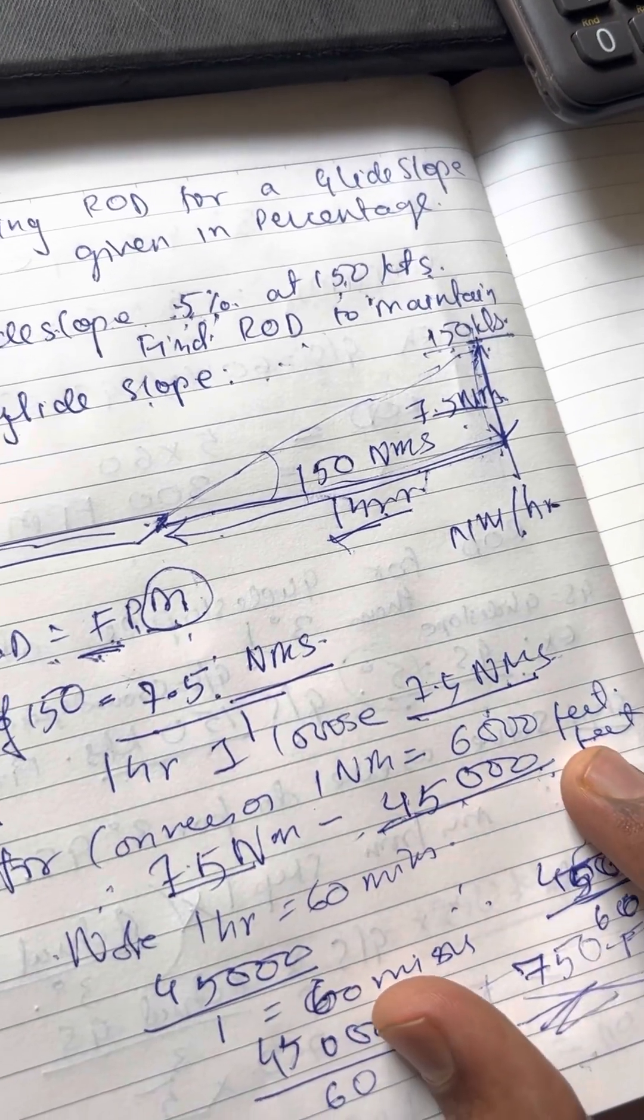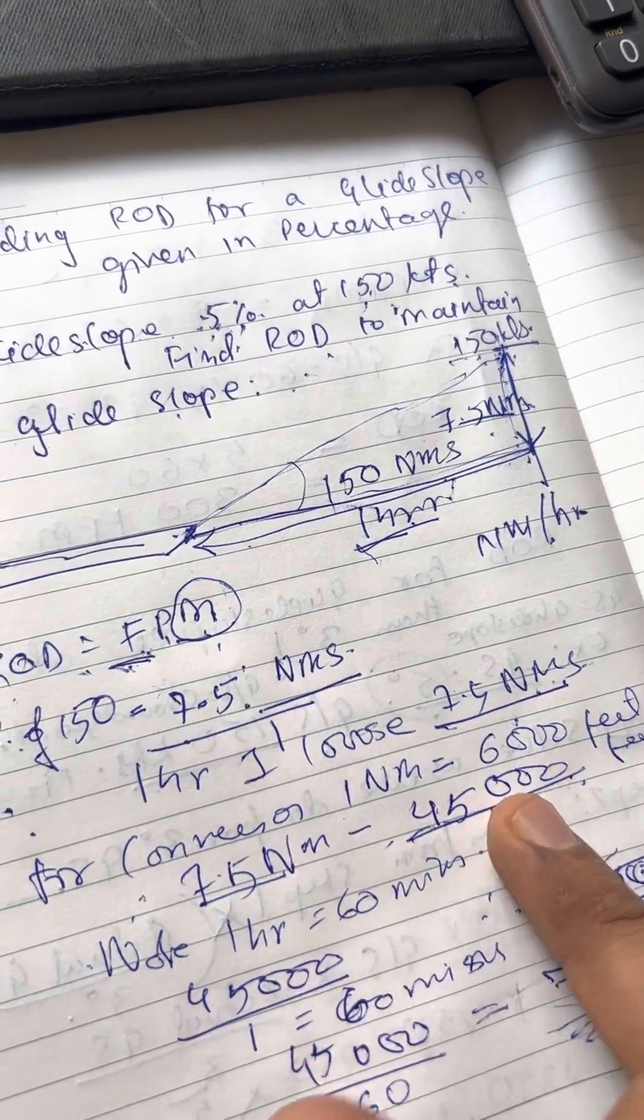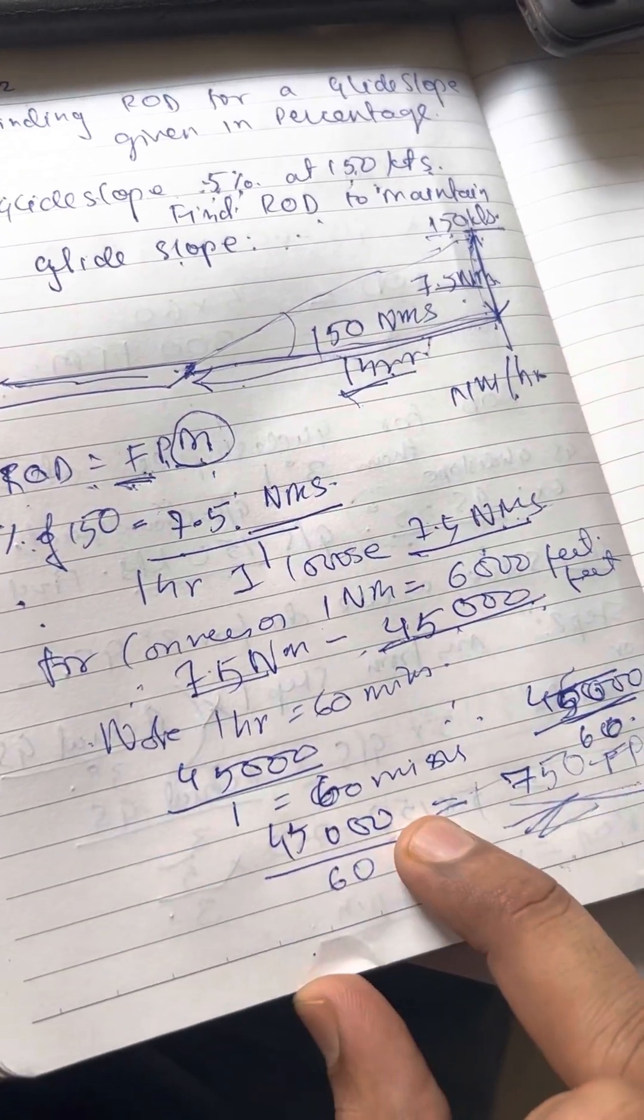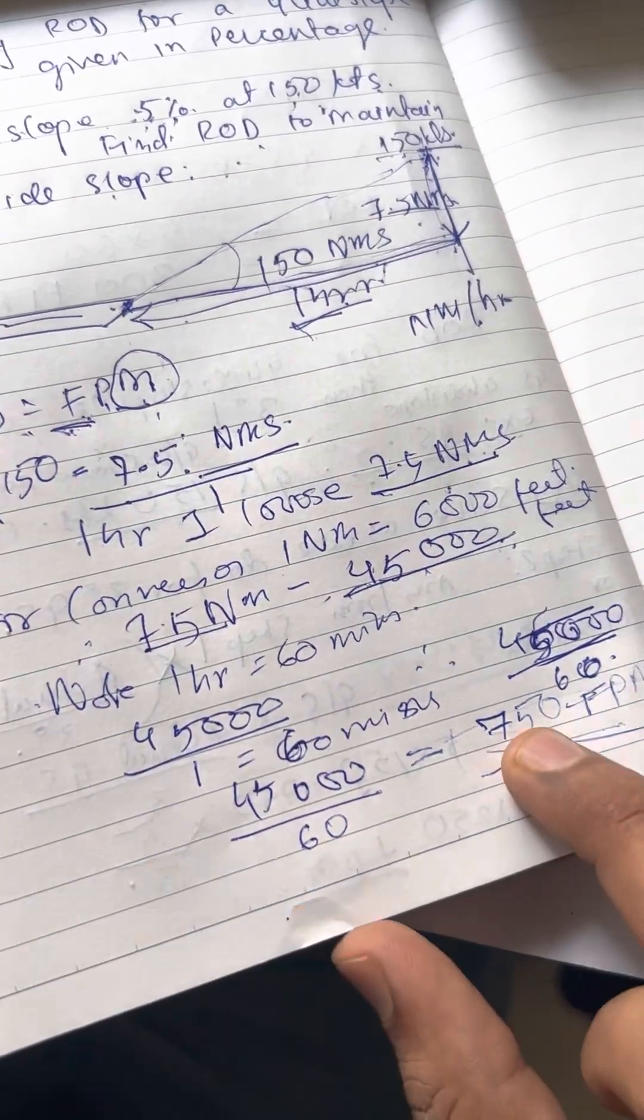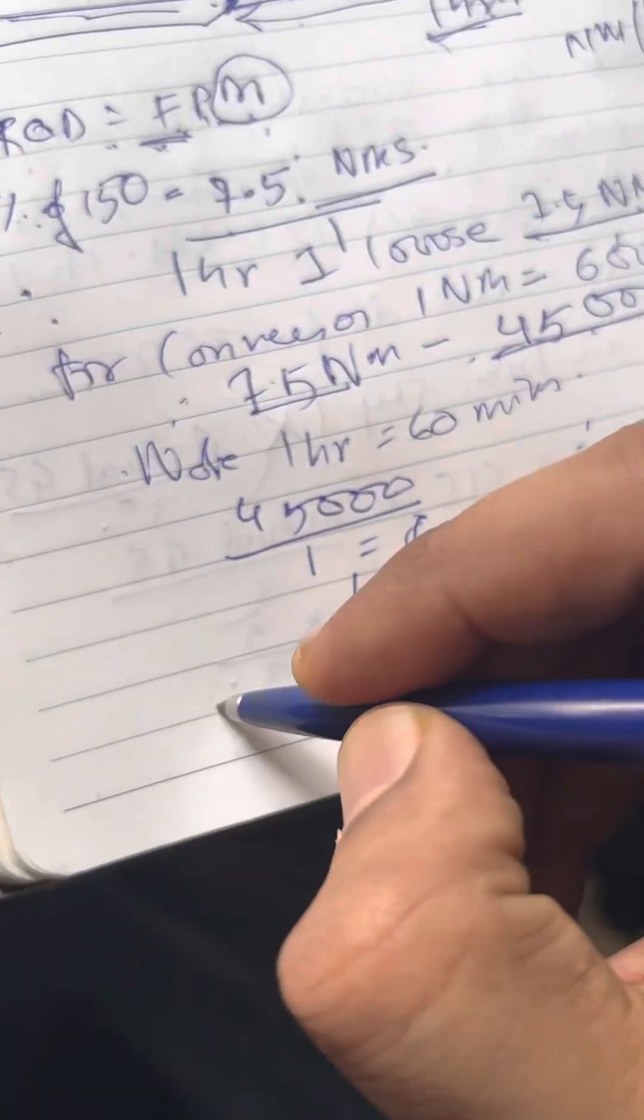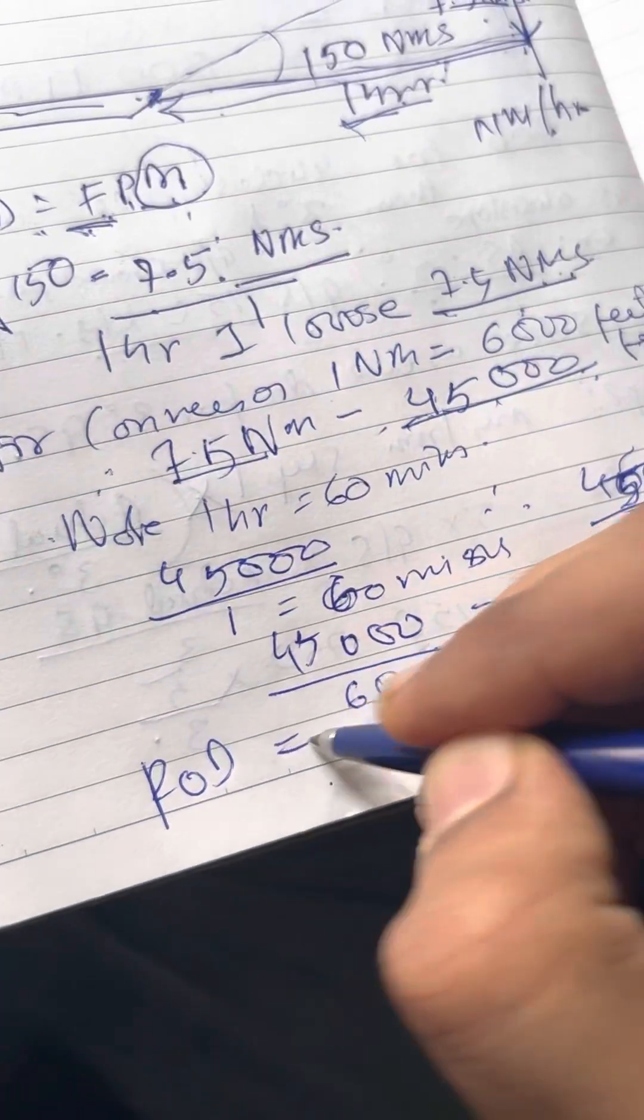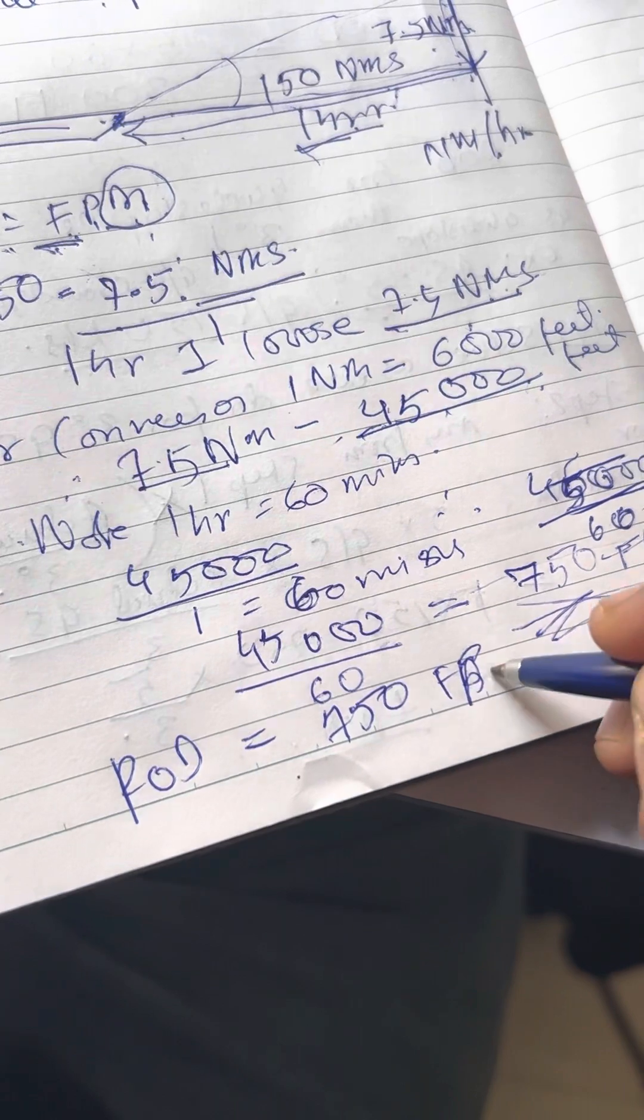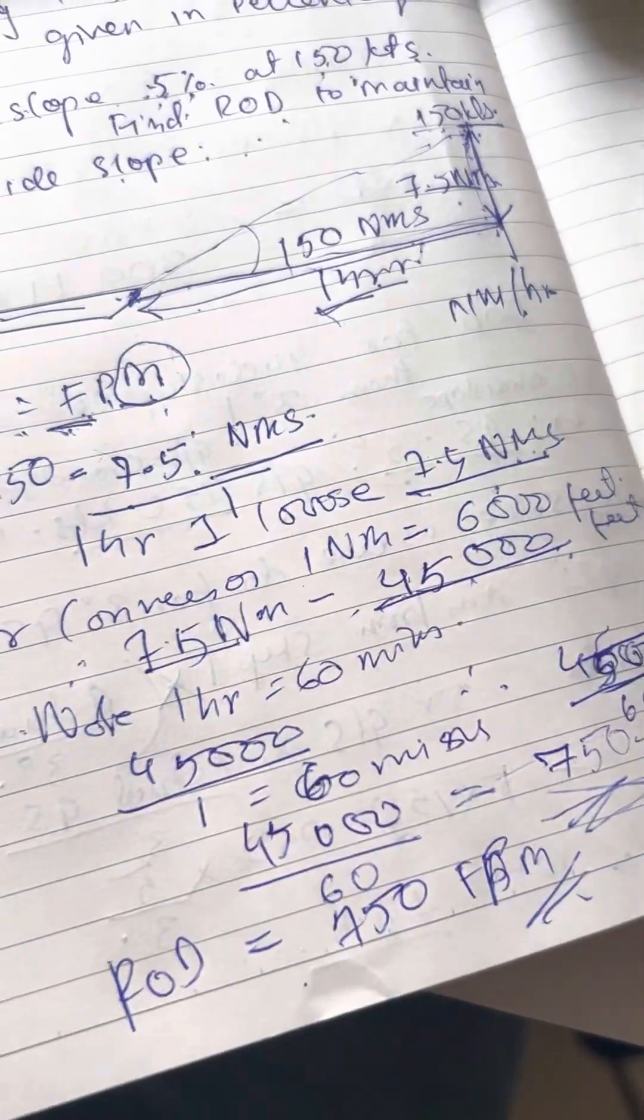You convert the nautical miles into feet by multiplying whatever percent value you get of your speed by 6,000 to get feet loss per hour. And to divide the hour in minute, you just divide that feet value by 60 to get the answer in feet per minute. So, your ROD is 750 feet per minute. In your books, this is option A.